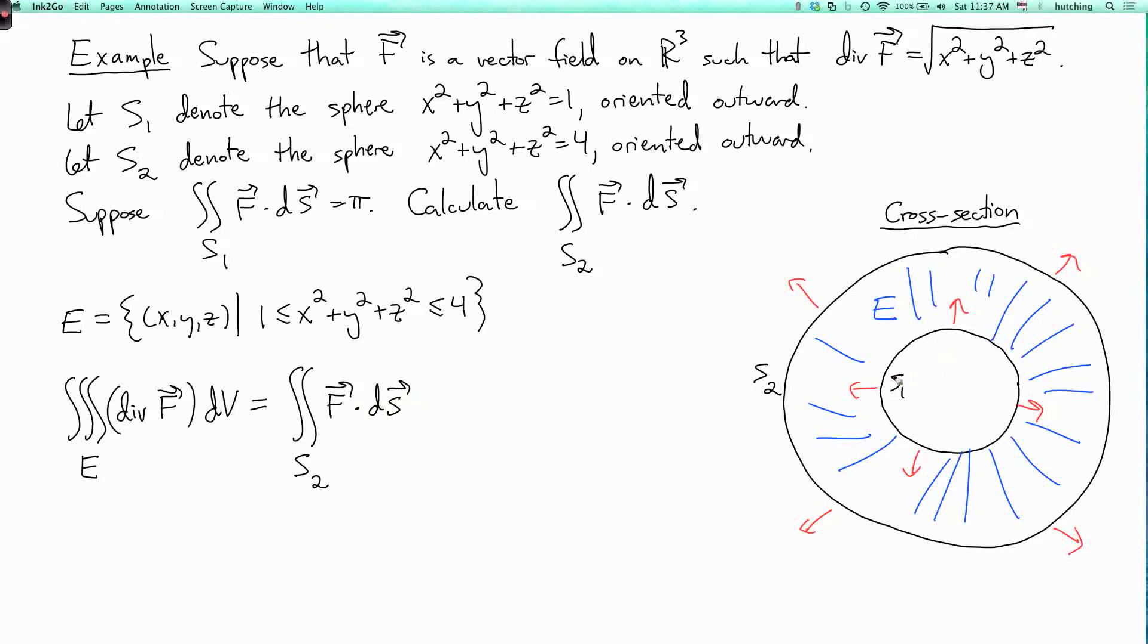But then what's the other boundary? Well, it's S1, the rest of the boundary is S1, but in the divergence theorem you need to be oriented pointing out of the solid region E. But the orientation of S1 that we're given points outward from the center of the sphere, but it points inward towards E. So in the divergence theorem I actually need to subtract the double integral over S1 of F dot dS.